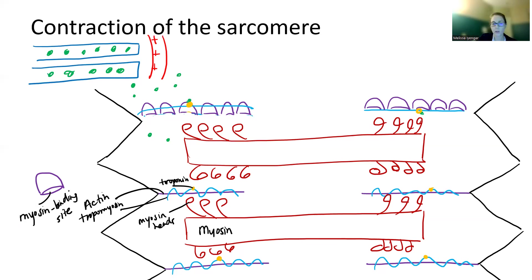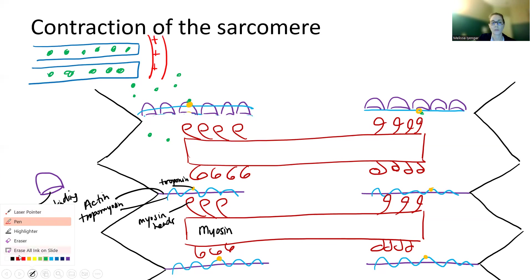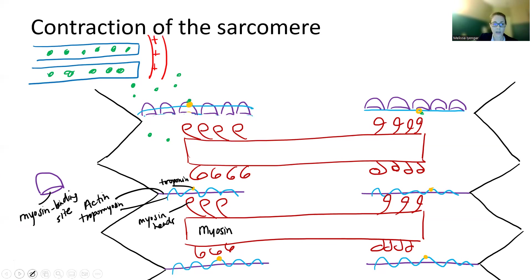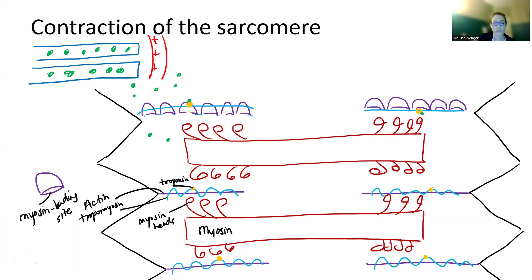We're going to set up a couple of additional things. On every single myosin head, we're storing a little bit of energy. Energy is going to be in the form of ATP. So you're going to store a little bit of ATP on each of your myosin heads.